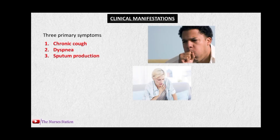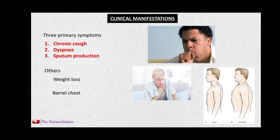There are three primary clinical manifestations of COPD: chronic cough, dyspnea or difficulty in breathing, and sputum production. Others include weight loss due to dyspnea interfering with eating patterns, barrel chest in which the anterior-posterior diameter of the chest increases giving it a barrel shape, and gradual employment of accessory muscles to aid in breathing.